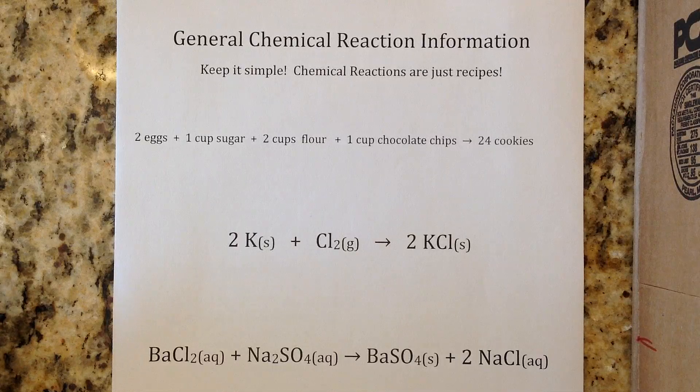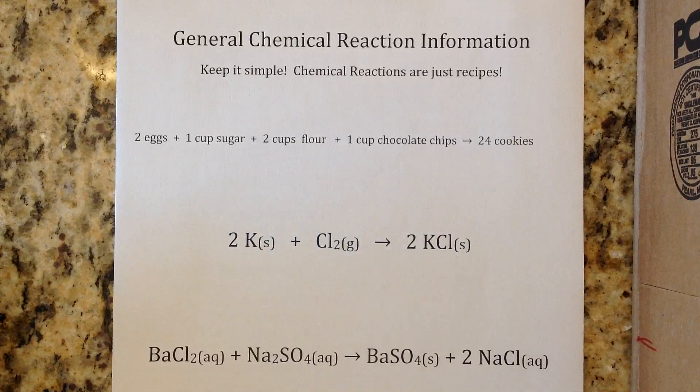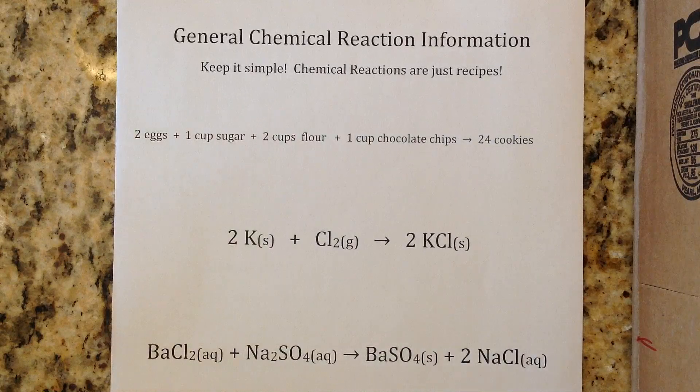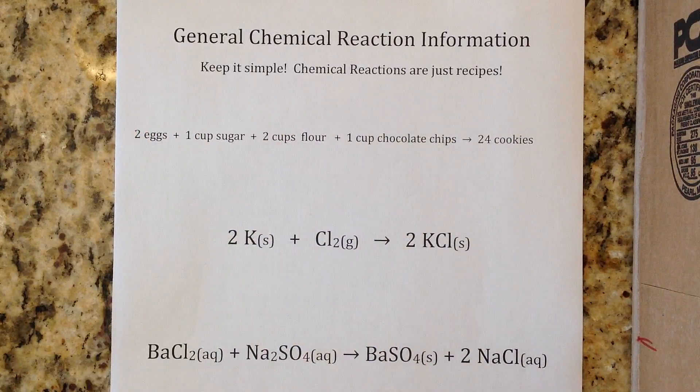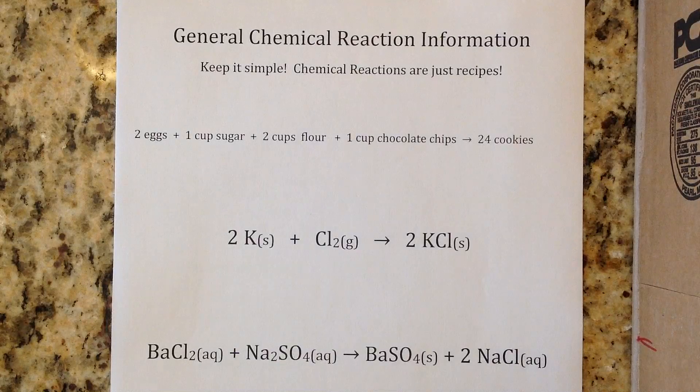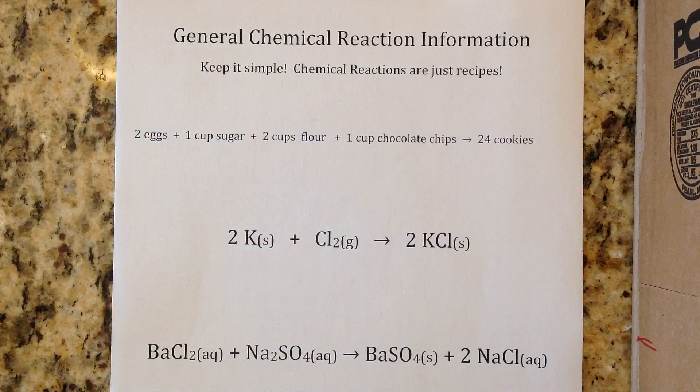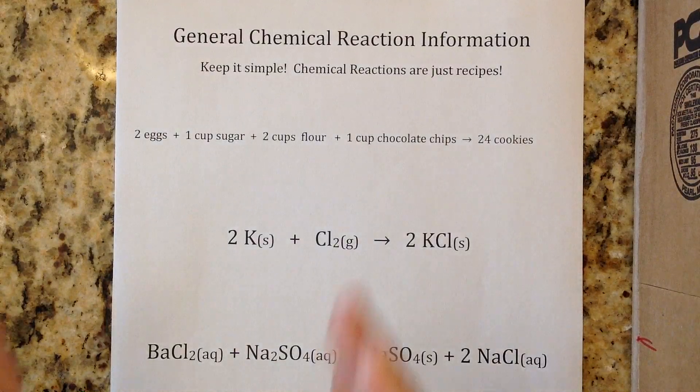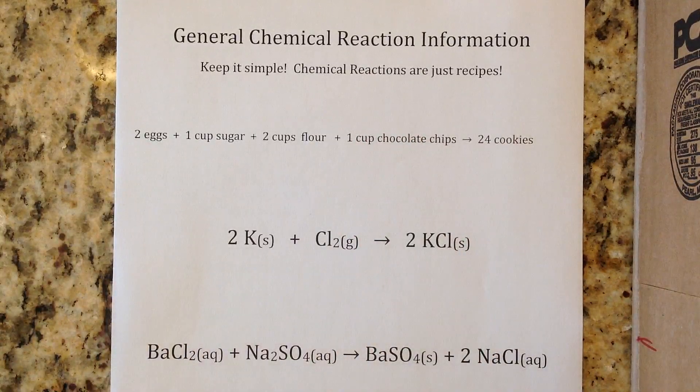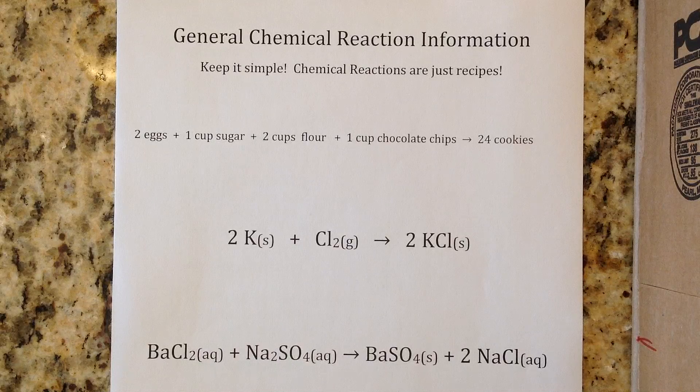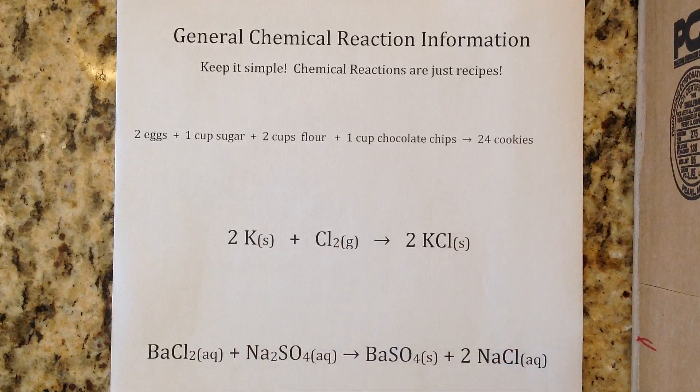Sometimes when you're cooking visually you may see one product but really you may have more than one. The same thing is true in a chemical reaction. We could have more than one thing on the left and more than one thing on the right. The main parts are your reactants on the left, your products on the right, and this arrow which is your yield sign.